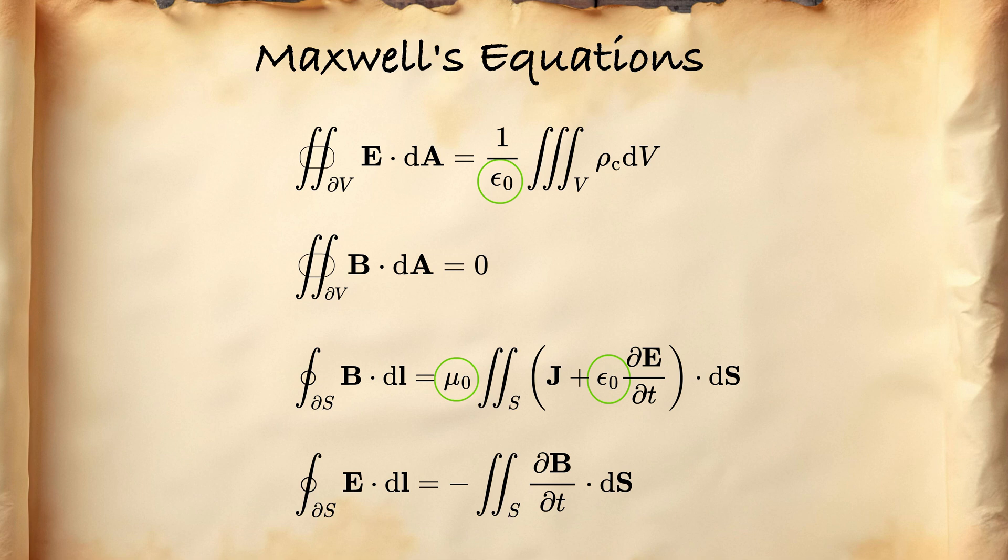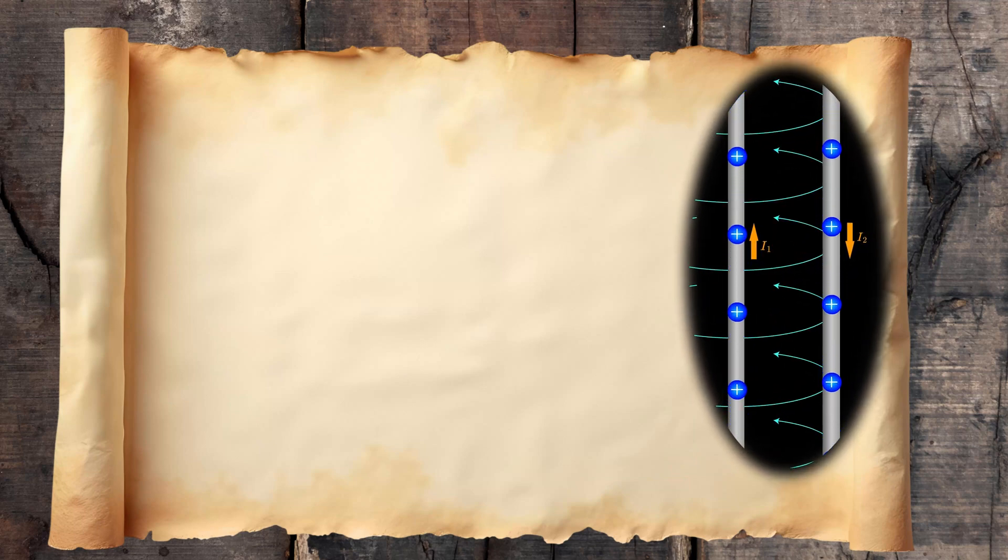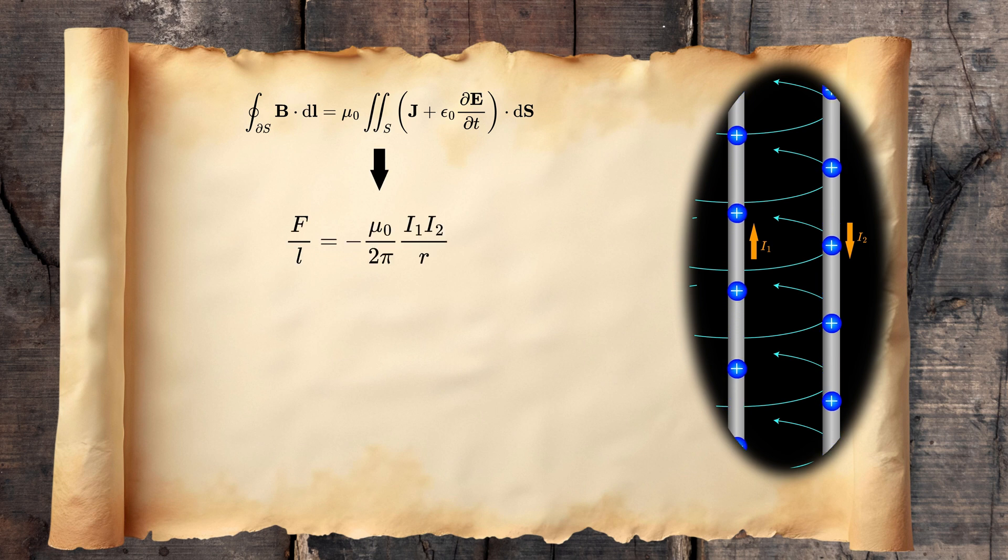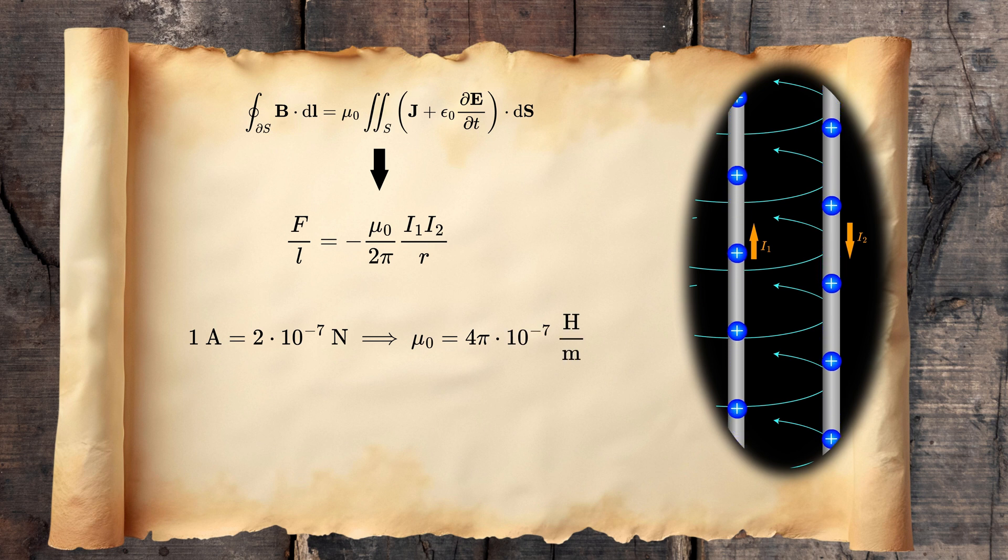And with that we have the permittivity and permeability of space, which are constants that tell us how the medium around responds to applied electric or magnetic field. If you were to calculate the force between current carrying conductors using Ampere's law, you would get this. And therefore by defining one ampere as this force per meter of length between two current carrying wires, we fix the value of permeability of free space to exactly this number.